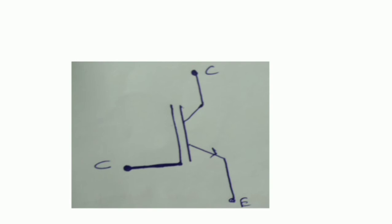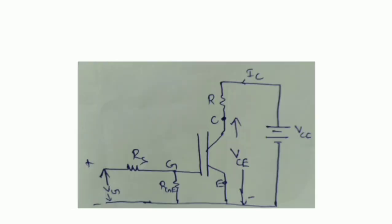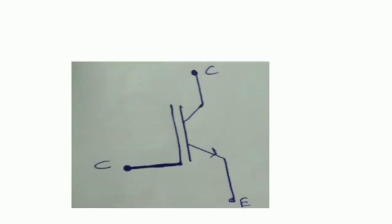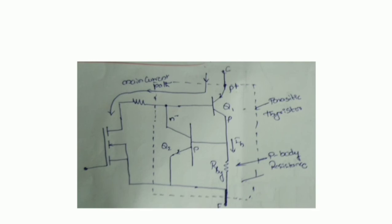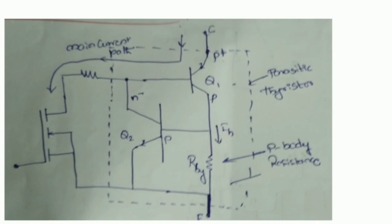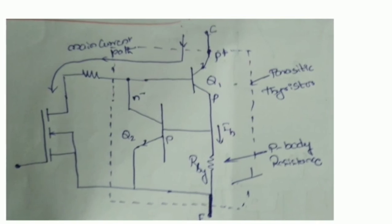The IGBT characteristics are similar to those of the power MOSFET. The static IV characteristics show the relationship between collector current and collector-to-emitter voltage. The transfer characteristics are similar to the MOSFET case, with a threshold voltage VGET. When the collector is made positive with respect to the emitter with no gate-emitter voltage, two junctions between N-minus and P-regions are reverse biased, so no current flows. When the gate is made positive by VGE exceeding the threshold voltage, an N-channel inversion layer is formed and the IGBT conducts.